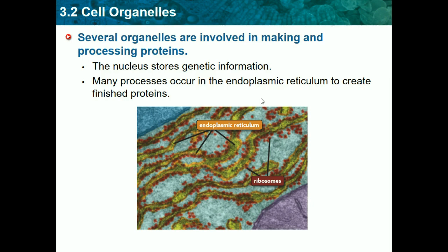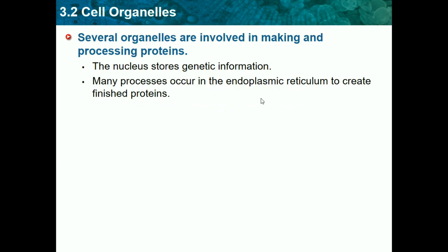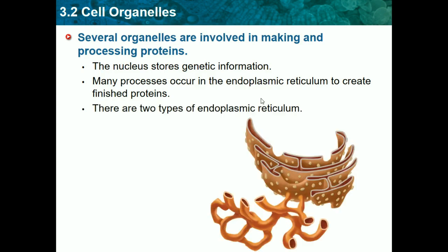The ER surrounds the nucleus and is home to ribosomes, which are little dots that combine amino acids to make proteins. There are two types of endoplasmic reticulum: rough ER and smooth ER. The smooth ER makes lipids, while the rough ER has ribosomes and makes proteins.